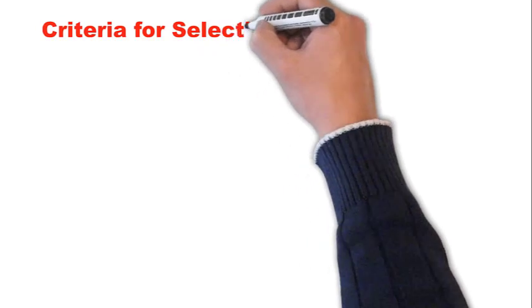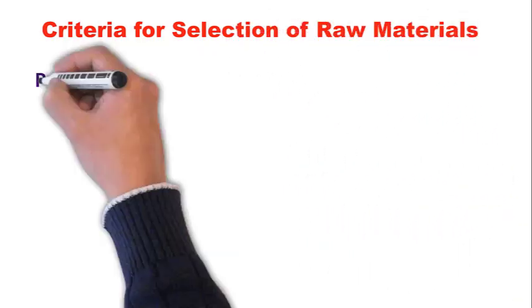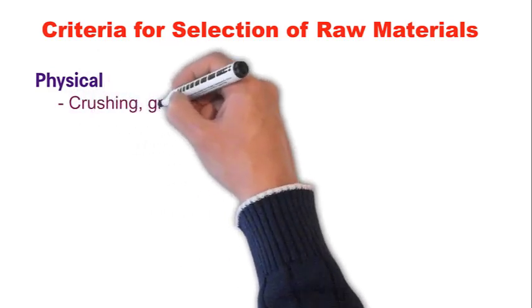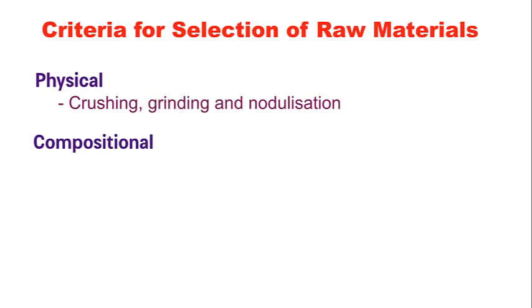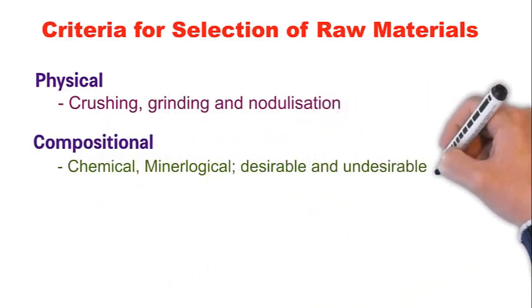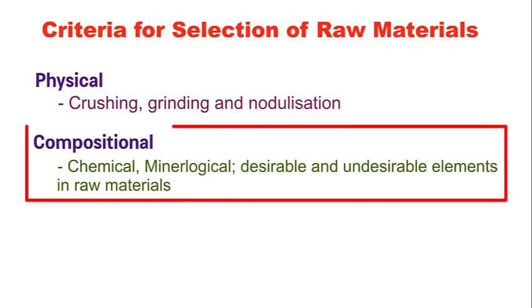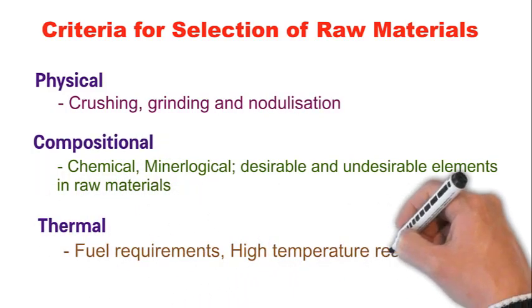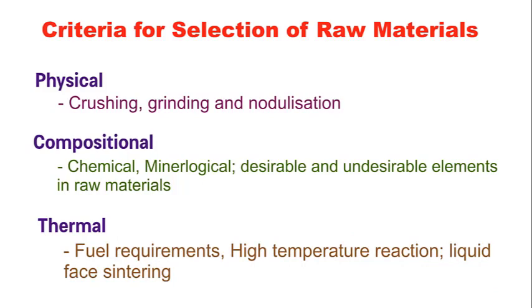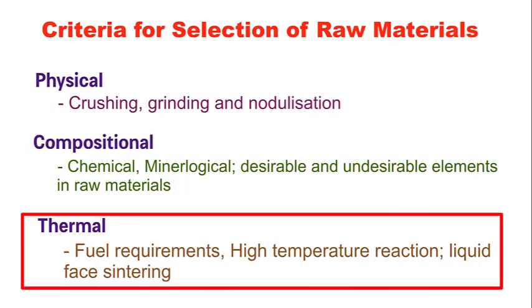There are various criteria followed in the selection of raw materials. First, the physical criteria — how easily the raw material can be crushed and ground for formation of clinker with less energy. Next, the compositional criteria — the chemical and mineralogical composition of raw materials and which desirable elements are needed to produce good quality clinker. Then the thermal criteria — how much fuel and what type of fuel is required, and what temperature is needed to produce good quality clinker.